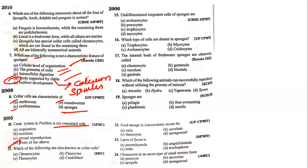Which is also known as collar cells? Choanocytes — yes, already studied. Undifferentiated totipotent cells of sponges are archaeocytes — we can answer this blindly now because we know what archaeocytes are. Just make sure to answer archaeocytes.